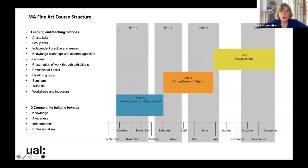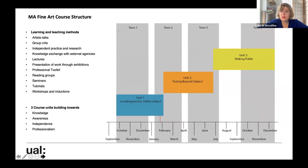In terms of course structure, there are three units involving artist talks, group crits, independent practice and research, knowledge exchange with external agencies, lectures, presentations of work through exhibitions, and the professional toolkit. We also do reading groups specifically directed at drawing research, seminars, one-to-one tutorials, workshops and inductions. The workshops and inductions create a huge foundation for the course when you enter the MA in Drawing — they situate your making in different contexts and enable you to understand how you want to drive your practice forward in drawing research.